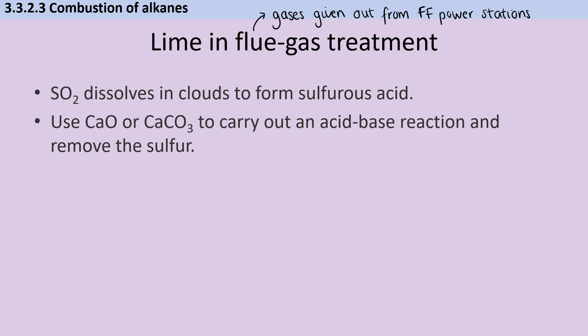In order to prevent this within the power station, calcium oxide or calcium carbonate are used to carry out an acid-base reaction and remove that sulfur. So typically, calcium carbonate would react with sulfur dioxide to produce calcium sulfite and also carbon monoxide. However, if additional oxygen is added, then we can make calcium sulfate and carbon dioxide.